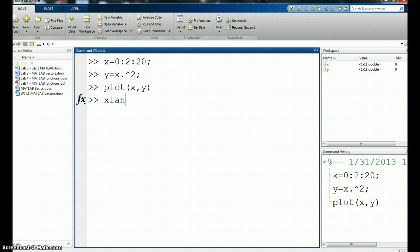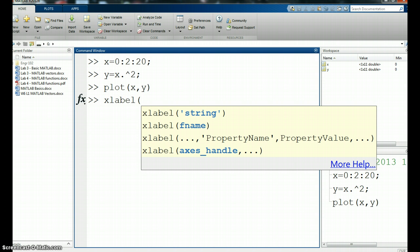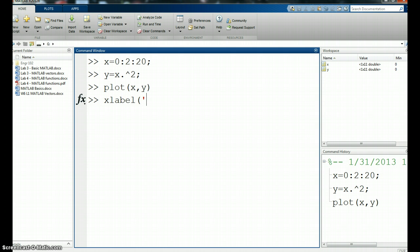I could say x label. And again, if I wait for a second, it'll tell me some options. One is to just enter a string. Whatever I want the x label to be has to be in single quotes. So let's say the x coordinate on this is a T for time, comma, seconds.